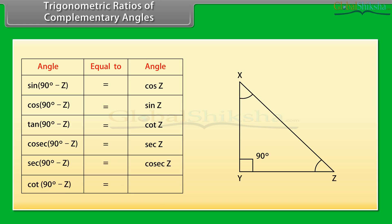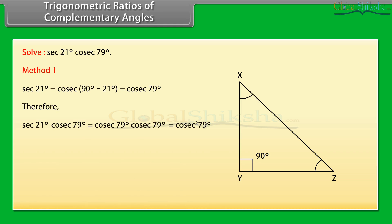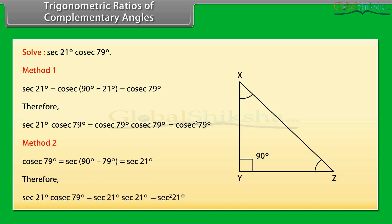Solve: sec 21° × cosec 79°. Since sec 21° equals cosec(90° − 21°), which equals cosec 79°, therefore sec 21° × cosec 79° equals cosec 79° × cosec 79°, which equals cosec² 79°. Alternatively, cosec 79° equals sec(90° − 79°), which equals sec 21°. Therefore, sec 21° × cosec 79° equals sec 21° × sec 21°, which equals sec² 21°.